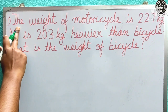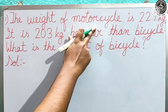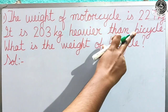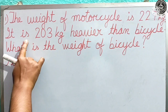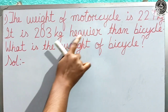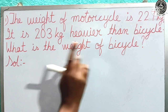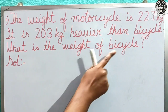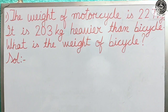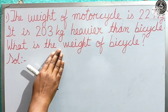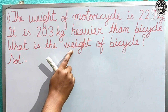Here is your first question. The weight of a motorcycle is 227 kg. It is 203 kg heavier than a bicycle. What is the weight of the bicycle? You have to find out. This is a word problem based on weight, as you can see.